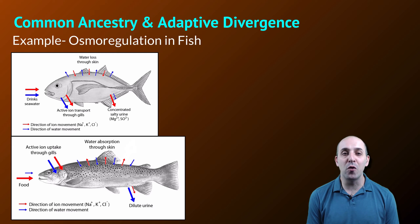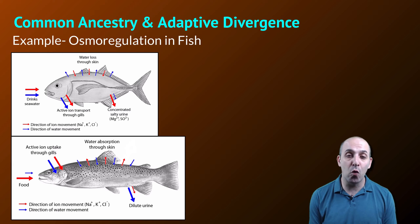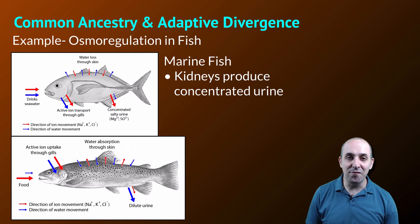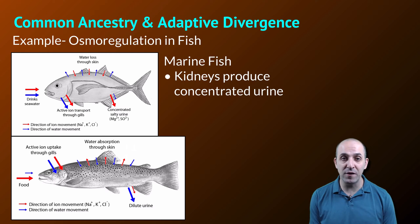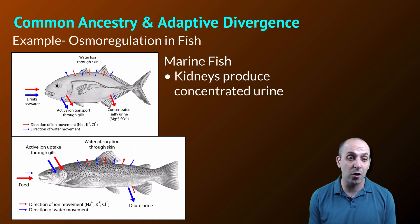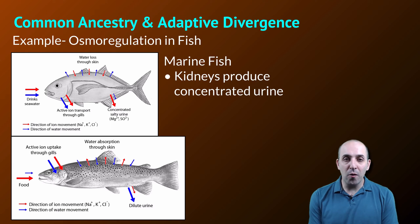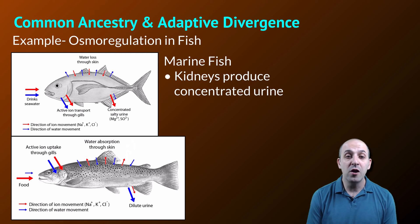When looking at physiological regulation in organisms, we can also see examples of both common ancestry and adaptive divergence pretty much anywhere we look. The example here is how marine fish and freshwater fish regulate the amount of water inside their bodies, because it works in opposite ways. Marine fish are in hypertonic environments compared to the cells of their body, so water is constantly being lost from the organism. Marine fish have a variety of adaptations to tolerate these hypertonic environments — they'll drink a lot of seawater, actively transport ions through their gills, and produce a very small amount of concentrated, very salty urine.